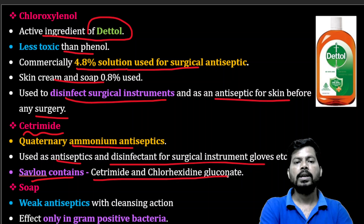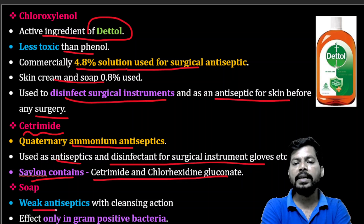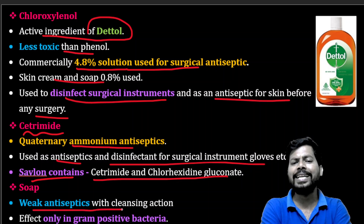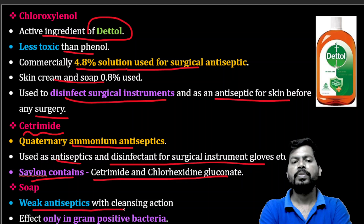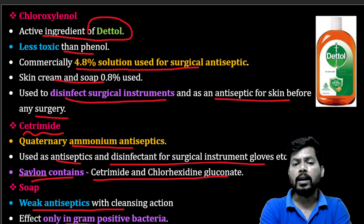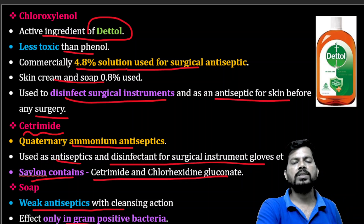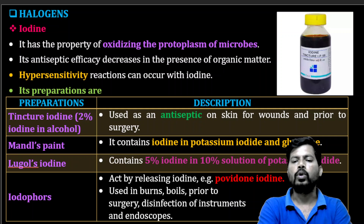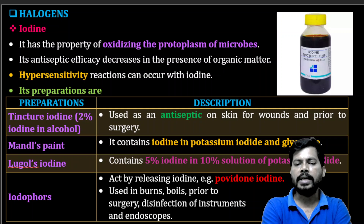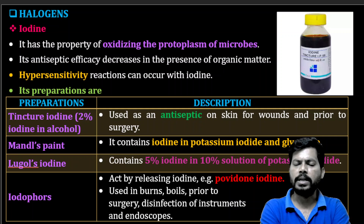Soaps are weak antiseptics used mainly for cleansing purposes. They are effective only on gram-positive bacteria. Next are the halogens.